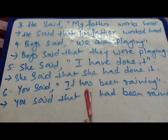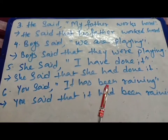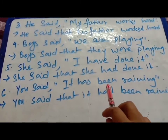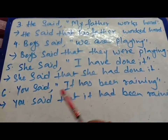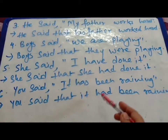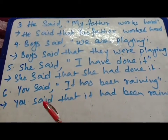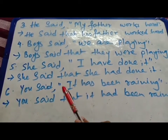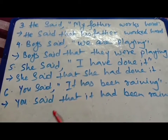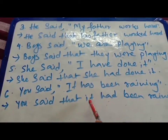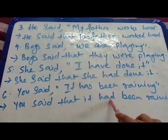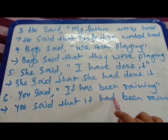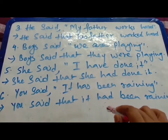Number six: You said, it has been raining. It is present perfect continuous. Since the reporting verb is in simple past tense, present perfect continuous will become past perfect continuous. After removing the inverted comma and adding that: you said that it had been raining. Only has been changes to had been because it must become past perfect continuous.